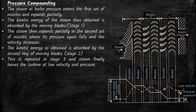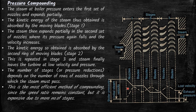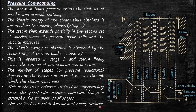The same process is repeated as the steam moves over the third stage. The number of stages — or pressure reductions — depends on the number of rows of nozzles through which the steam must pass. This is the most efficient method of compounding since the speed ratios remain constant, but it is expensive due to the greater number of stages. This method is used in Rateau and Zoelly turbines.